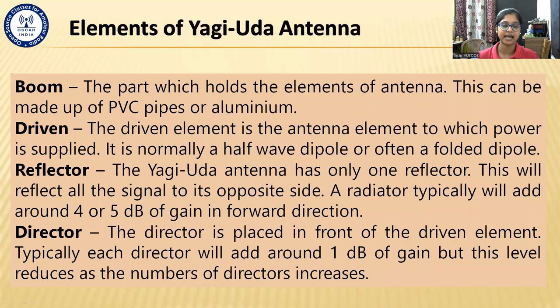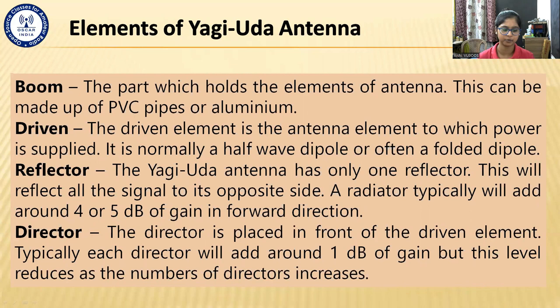Elements of the Yagi-Uda antenna. We will now know them in detail. First, the boom: the part which holds the elements of the antenna. This can be made up of PVC pipes or aluminum. The boom is the rod on which all the elements are fitted. Next, the driven element: it is the antenna element to which power is supplied. It is normally a half-wave dipole or often a folded dipole. The driven element is the only active element — it is connected to the power supply — and there is always only one. A folded dipole is an antenna with two conductors connected on both sides and folded to form a cylindrical closed shape.